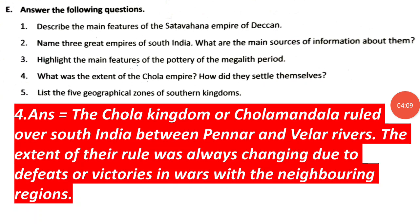Question 4: What was the extent of the Chola empire? How did they settle themselves? Answer: The Chola kingdom, or Cholamandalam, ruled over South India between the Penar and Velar rivers. The extent of their rule was always changing due to defeats or victories in wars with neighboring regions.